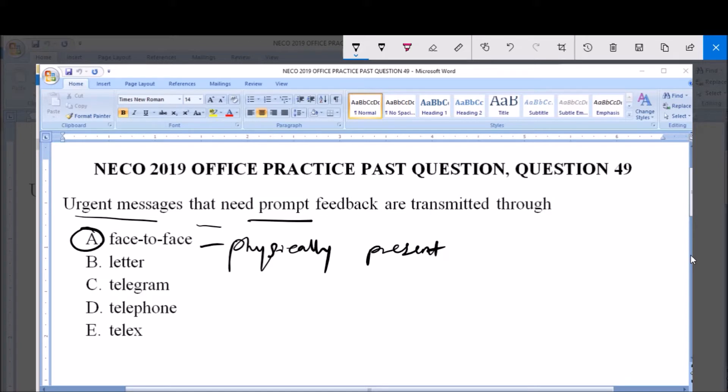There is prompt, that is, immediate feedback. Because in this kind of transmission of information, it is very urgent. And so therefore, the most appropriate means of transmission for urgent messages that need prompt feedback